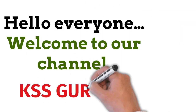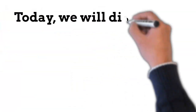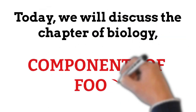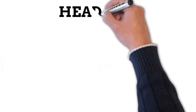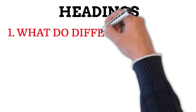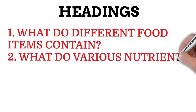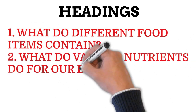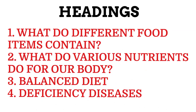Hello students, welcome to our channel KSS Gurukul. Today we will discuss the chapter of biology that is components of food. We will discuss the whole chapter under four headings: what do different food items contain, what do various nutrients do for our body, balanced diet, and deficiency diseases.